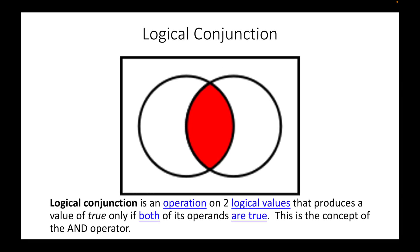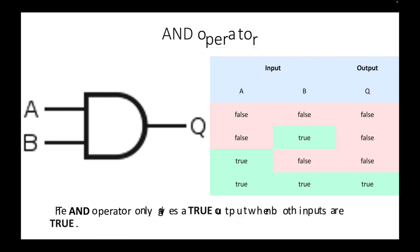Logical conjunction is an operation on two logical values that produces a value of true only if both of its operands are true. This is the concept of the AND operator. The AND operator only gives a true output when both inputs are true. When at least one of the inputs is false, the output is automatically false.